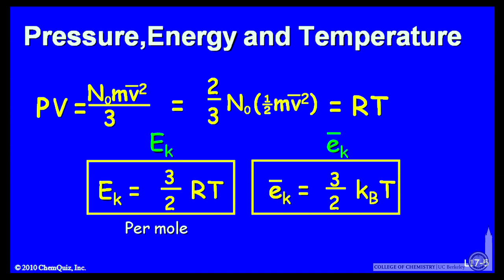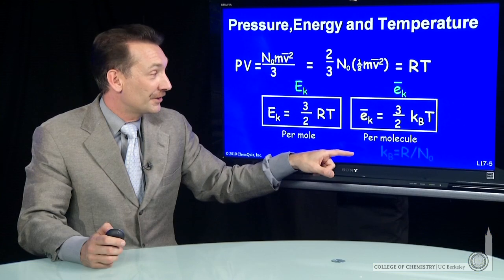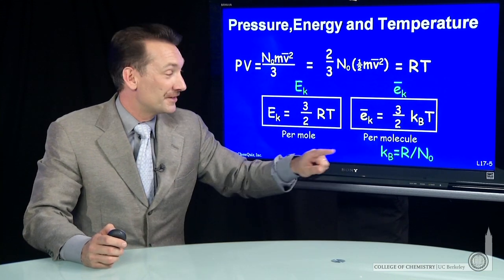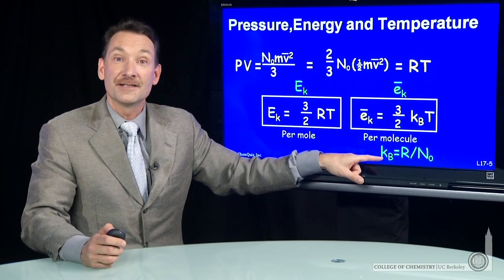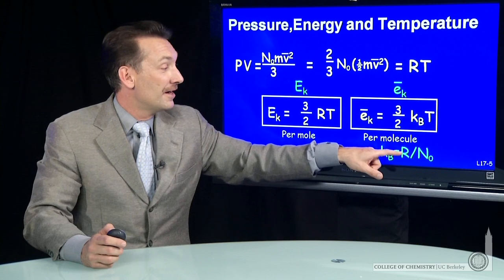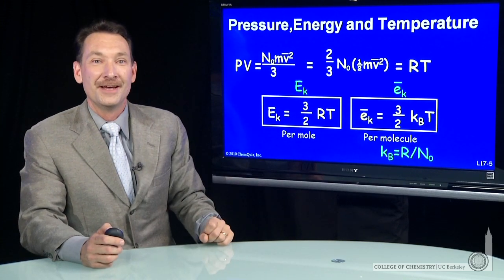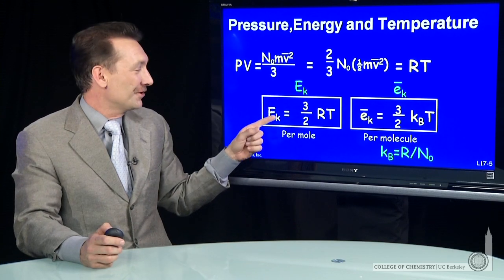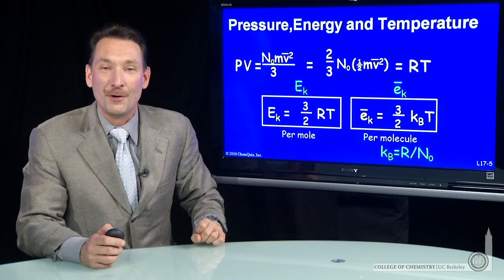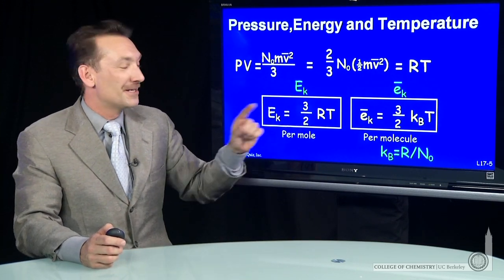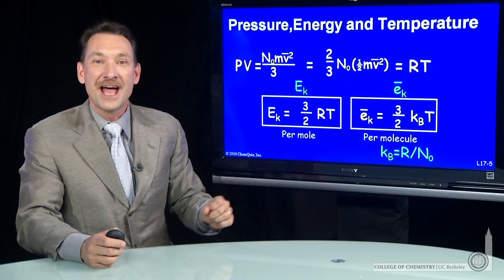And it's just R divided by Avogadro's constant. So what we have is a kinetic energy per molecule based only on the temperature, where this new constant, the Boltzmann's constant, is the gas constant divided by Avogadro's number. So a fundamental property here of nature, the energy per mole of a gas is dependent only on its temperature, three halves RT.